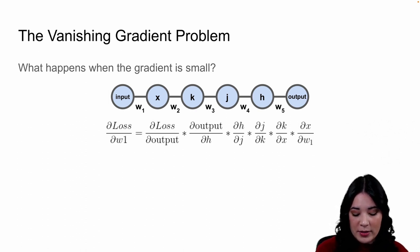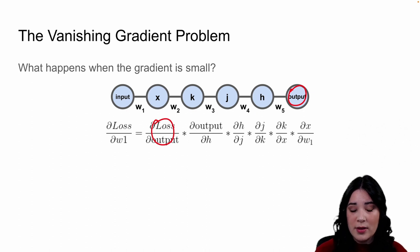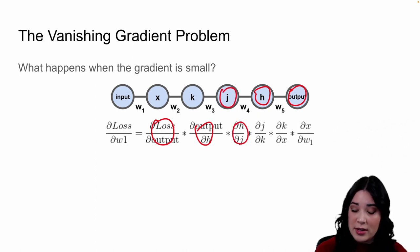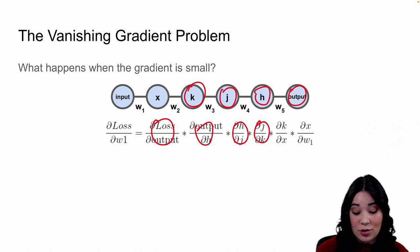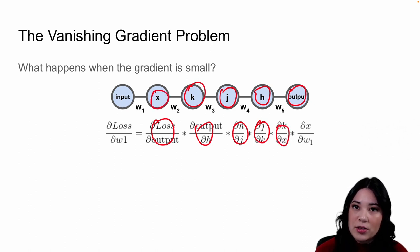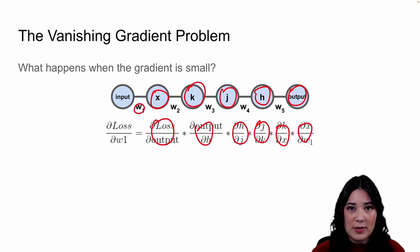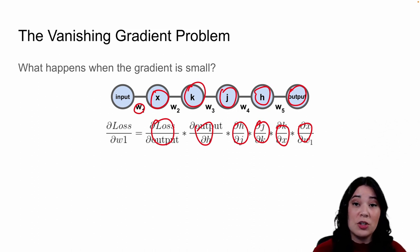To figure out how weight one impacts our loss, we have to multiply many partial derivatives together even in this very simple network. First, how does changing the output change the loss? Then how does changing h change the output? Then how does changing j change h? Then how does changing k change j? Finally, how does changing weight one affect x? When we multiply all these partial derivatives together, we get the effect of changing weight one on the loss function.